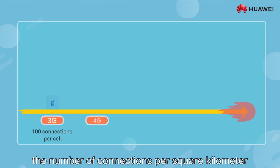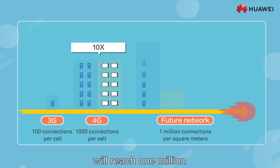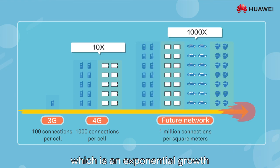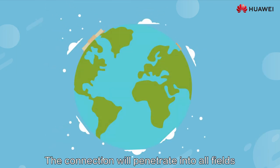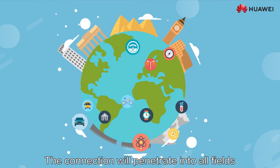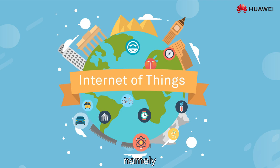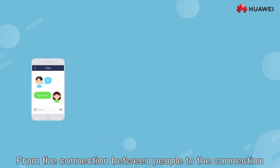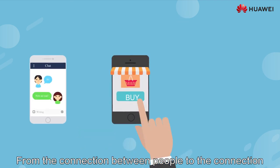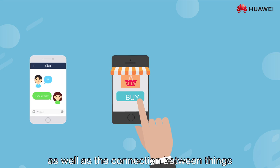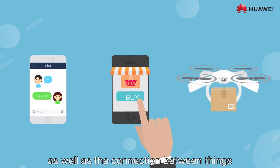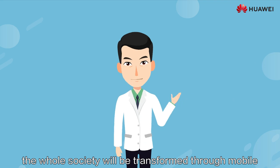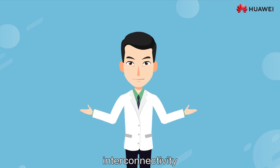In the future, the number of connections per square kilometer will reach one million, which is an exponential growth. The connection will penetrate into all fields of society, namely the Internet of Things. From the connection between people, to the connection between people and things, as well as the connection between things, the whole society will be transformed through mobile interconnectivity, greatly improving social efficiency.